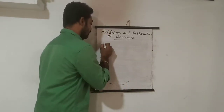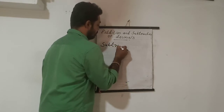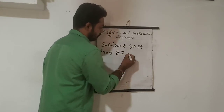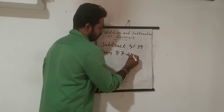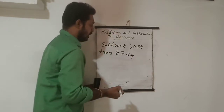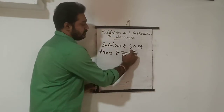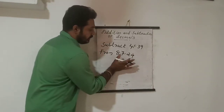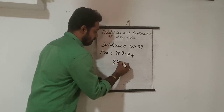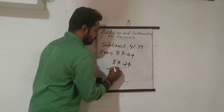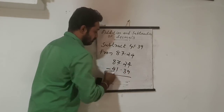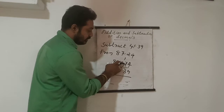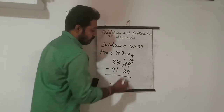Now when it comes to subtraction: subtract 41.39 from 87.24. Since 87.24 is the larger number, we write it first: 87.24 minus 41.39. We can see that 4 minus 9 is not possible, so we borrow from the next place. It becomes 14 minus 9 is 5.